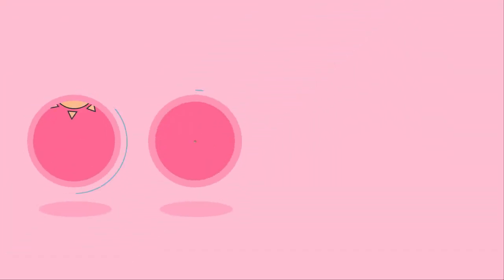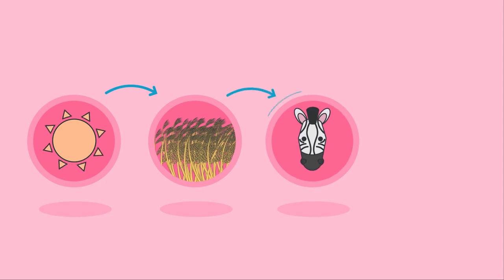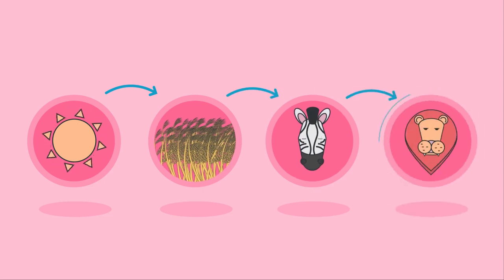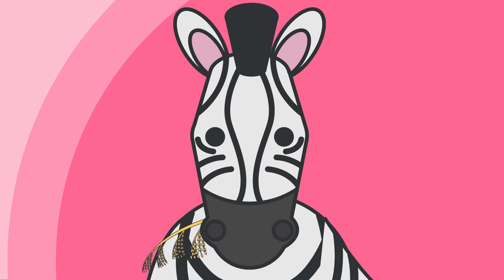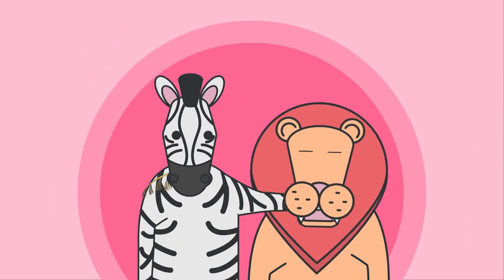For example, the grass uses energy from the Sun, the zebra eats the grass, a lion then eats the zebra. Think of it as the food's journey into the mouth of the next organism.